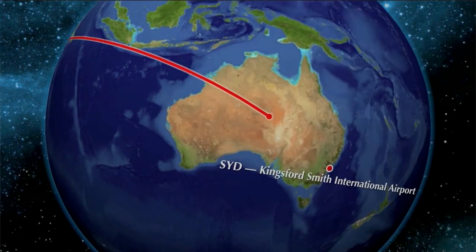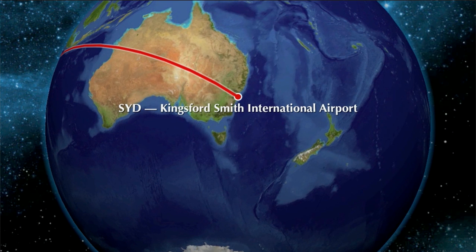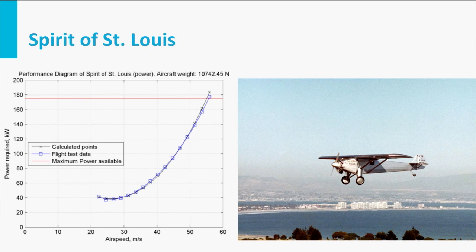Today we will solve the range problem for a propeller aircraft. And as an example, I will again use the Spirit of St. Louis, of which we already determined the performance diagram. In order to determine the maximum range of an aircraft, we should clearly define a mathematical parameter that we would like to optimize.